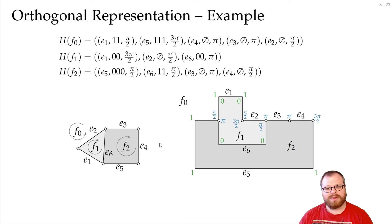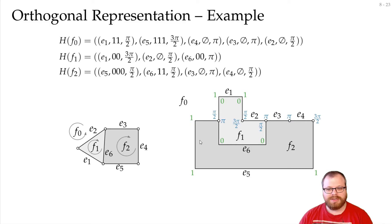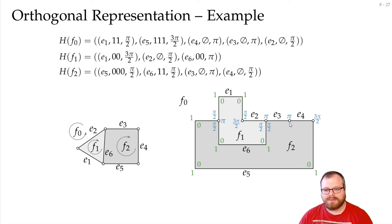For face F2, all edges are already drawn, so we just check that the drawing matches the representation. Starting with E5: three zeros — correct. Then pi/2, then E6 with two ones — correct. Then pi/2, E3 without a bend, pi, E4 without a bend, pi/2. Everything works out, so this representation is valid.